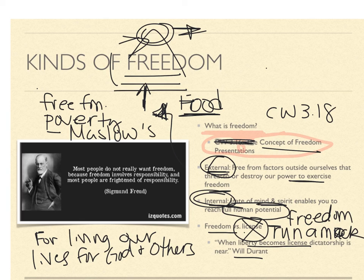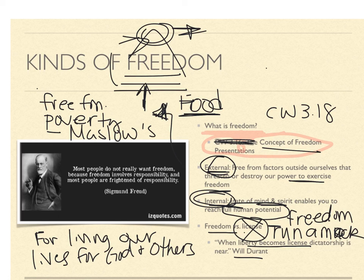As Christians, we would see this as the dictatorship of sin. A lot of students, in defining freedom, said freedom is doing whatever you want — but there's a problem with that. If freedom means doing whatever I want, what if I want to take your purse? What if I want to take you as my spouse but you don't want to? If freedom means doing whatever I want, that means people could do whatever they want to you — and again, that's dictatorship, the dictatorship of sin.